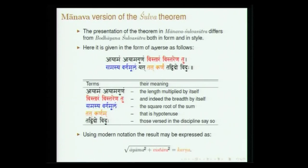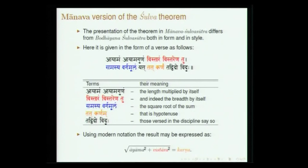The Manava Shulva Sutra also states this theorem in a slightly different form: 'Ayamam ayamam gunam vistaram vistarena samasya vargamoolam yatu tatu karanam tadvido viduhu.' Ayama and Vistara refer to the length and breadth of the rectangle. You multiply ayama by ayama, vistara by vistara — finding a² and b² — then Samasya means adding them together. Vargamoolam is the square root, so the square root of (a² + b²) gives the Karana (hypotenuse). This is a very clear statement of the theorem.